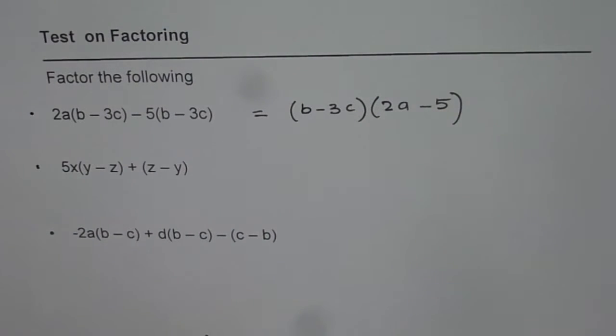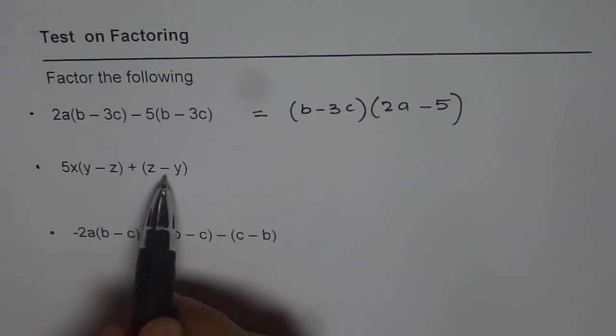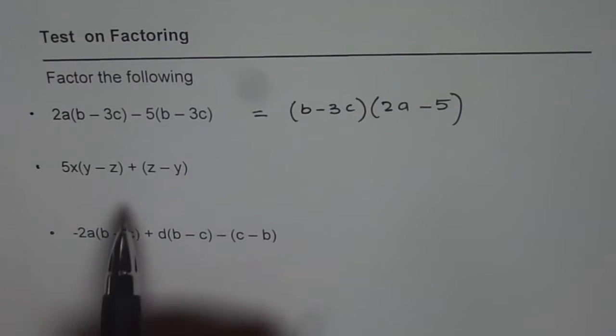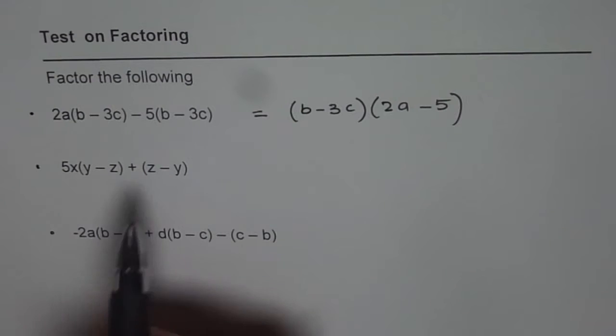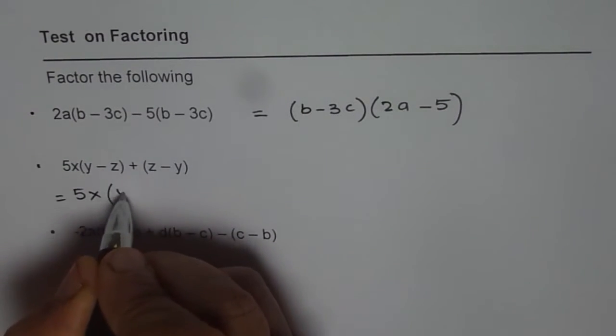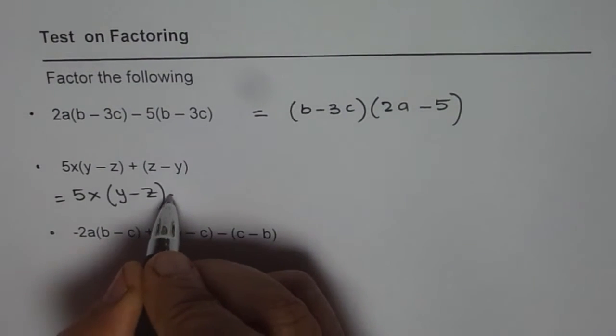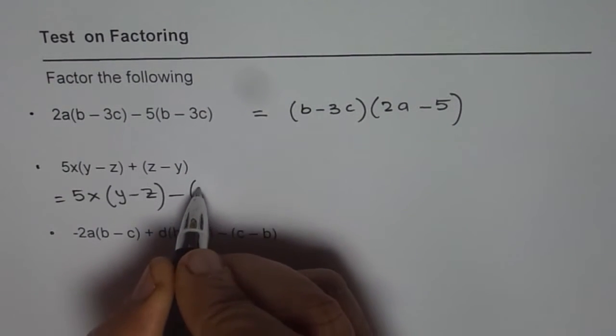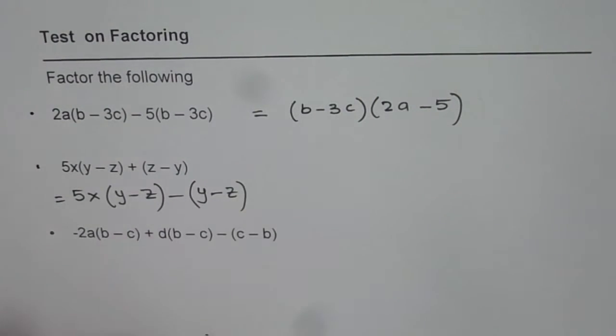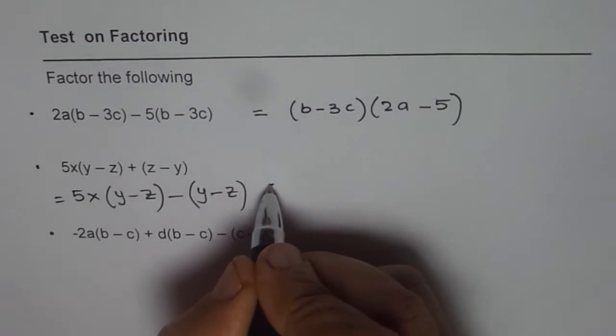So that is how it should be factored. Now let's analyze the second one which is 5x times y minus z plus z minus y. Now z minus y we could rearrange. We could write this as 5x times y minus z. Now if I factor minus outside and write y first since y is here then what do I get? Minus y minus z. Do you see that? So we get y minus z as a common factor.